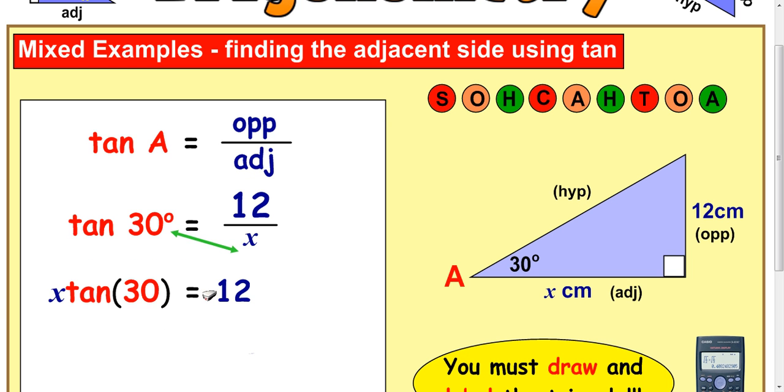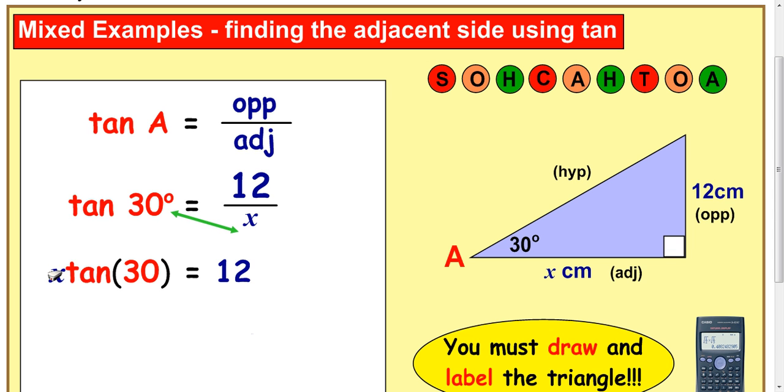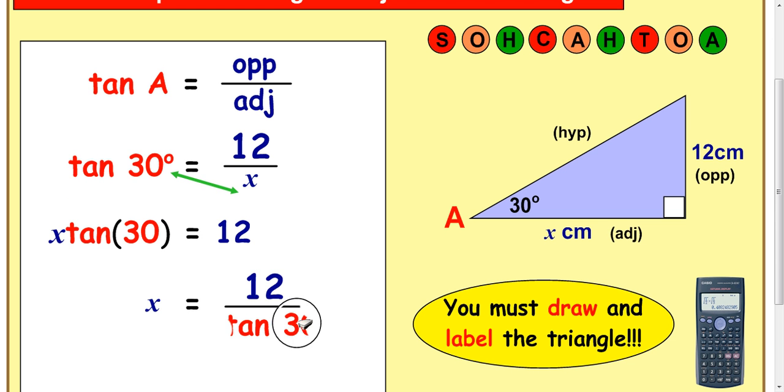Okay, so now that we have got all of this on one side, that's really x times tan 30. We don't put the multiplication in, just write it like that. To get x on its own, because x has been multiplied by tan 30, to get x on its own, we really want to divide by tan 30. So, we're doing 12 divided by tan 30, and that's the idea behind this.